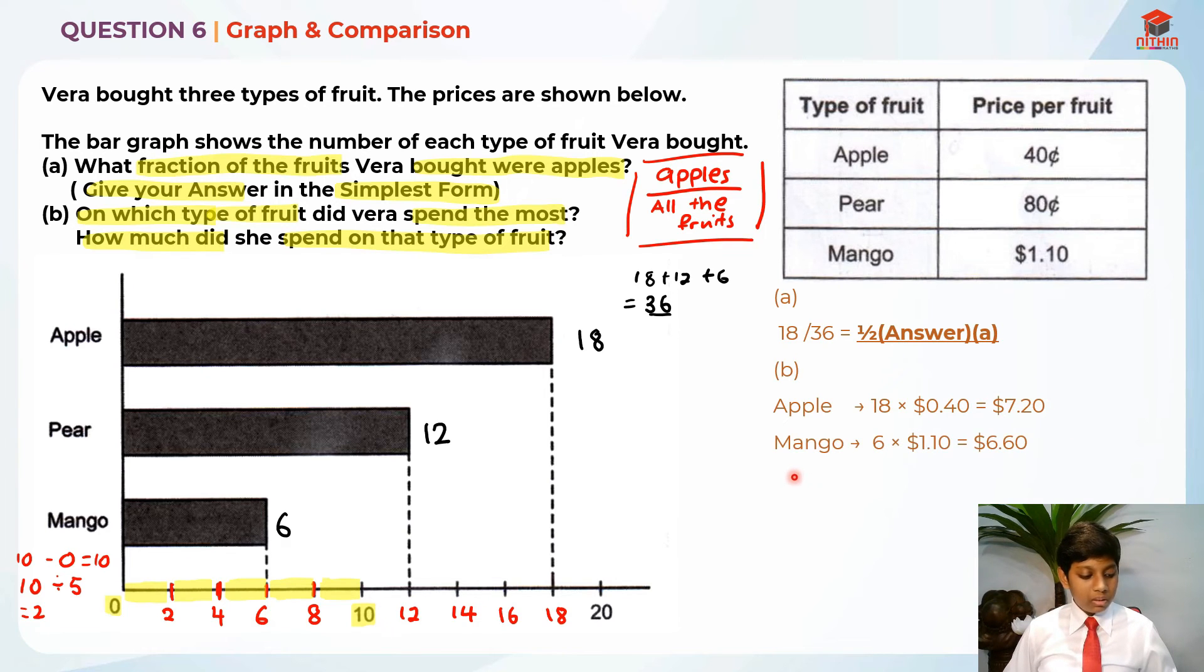And then, we do for the mango. There's six mangoes, right? I'm going to take six times one dollar and ten cents, because the mango costs one dollar and ten cents. It will give us six dollars and sixty cents. So far, the apple is the highest. Now, let's calculate for the pear.